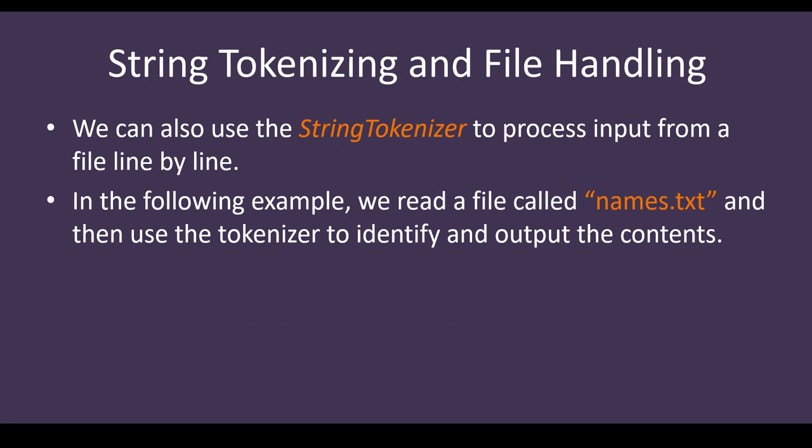In the following example, we read a file called names.txt. Remember, this file should be available in your system — you should have already created it. In the previous example we already created names.txt, so it is available. If it does not exist, it will show a file not found error. So you have to first create the file names.txt, and then you can read it. Then use the string tokenizer to identify and output the content, or do some manipulation and display it.